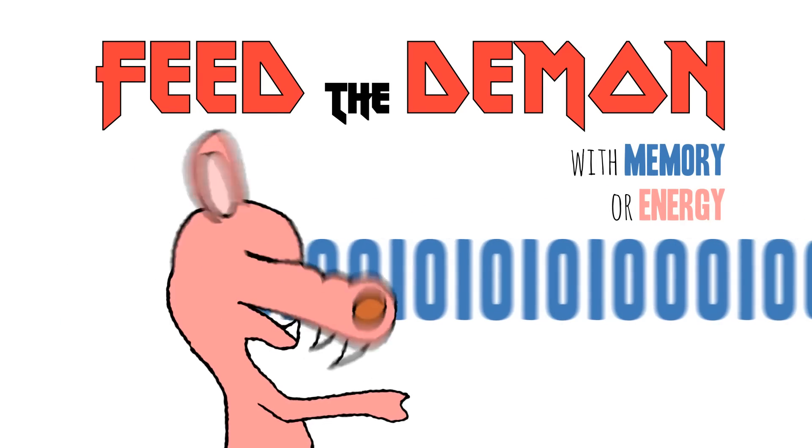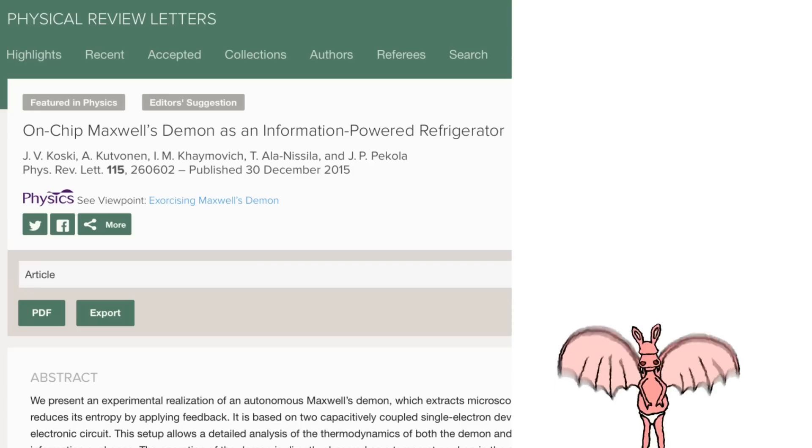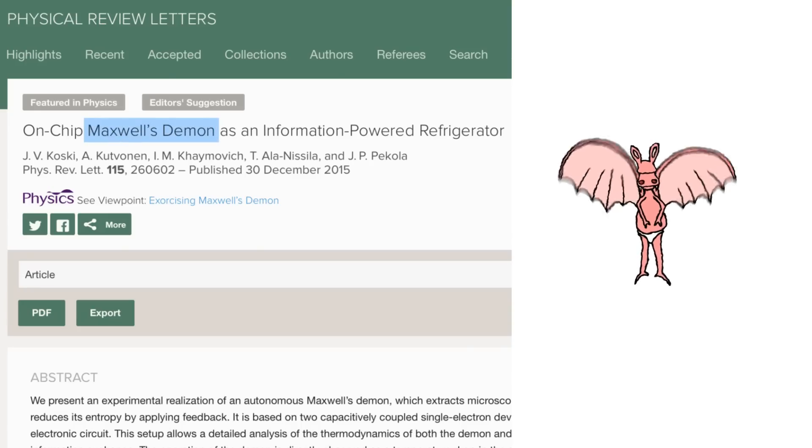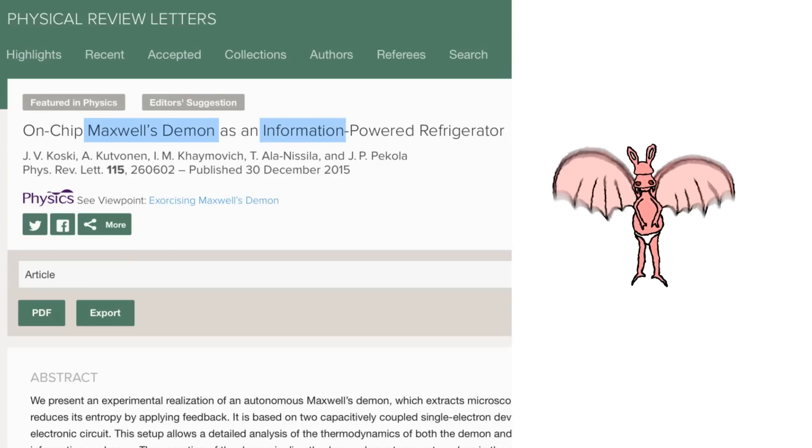This might all seem hypothetical, but physicists have actually made a very simple version of Maxwell's demon in the laboratory. And they used it to change the temperature of electrons, using nothing but information.